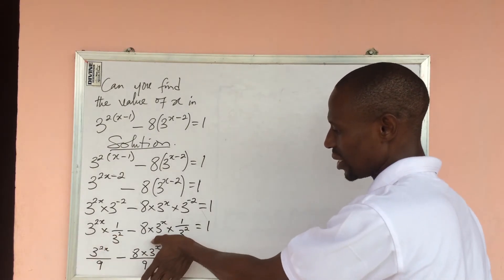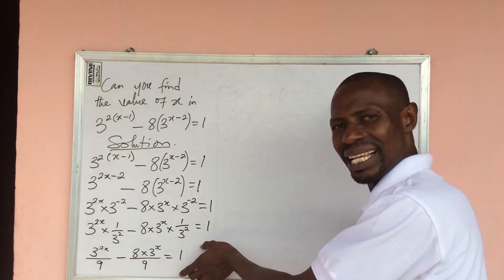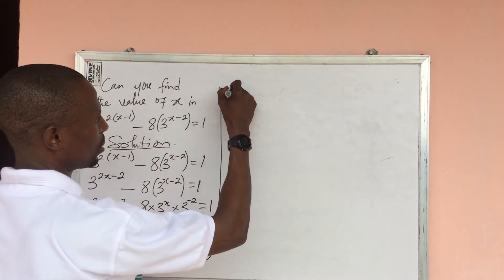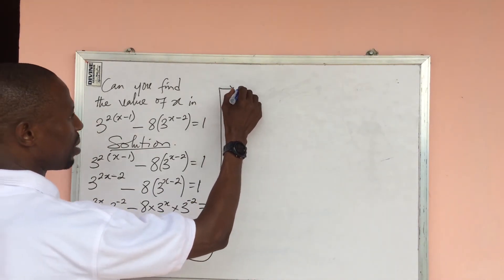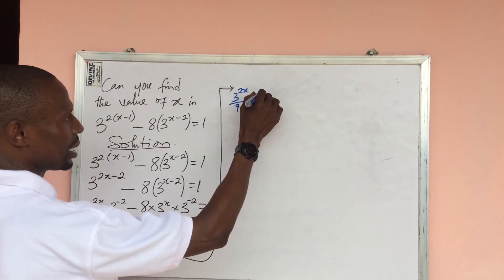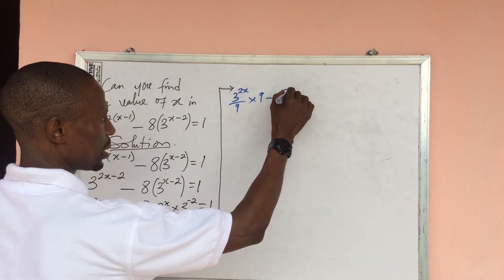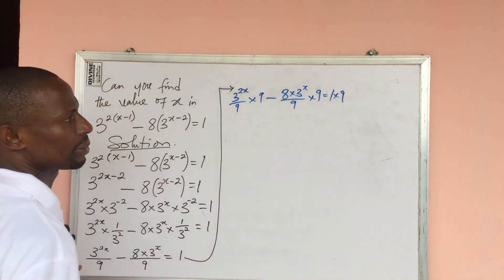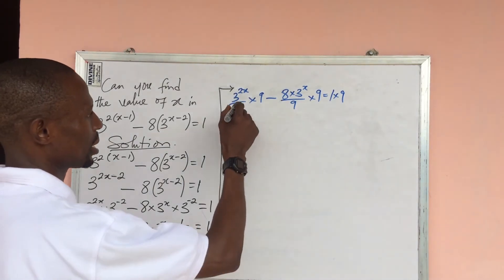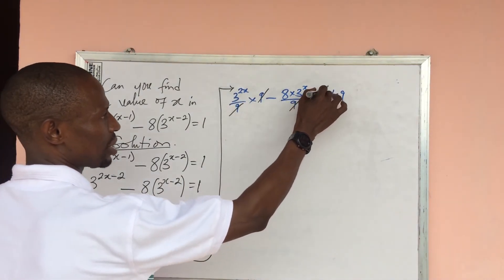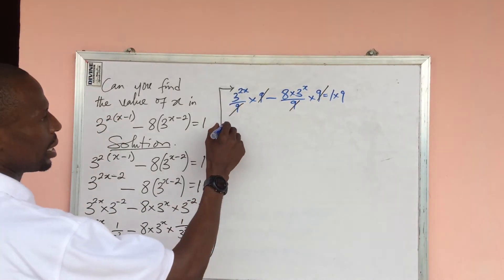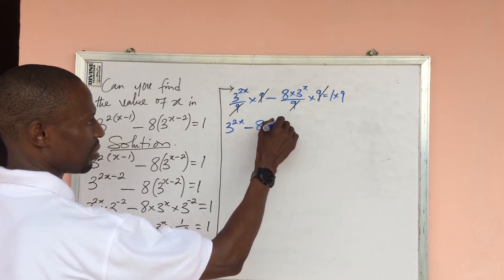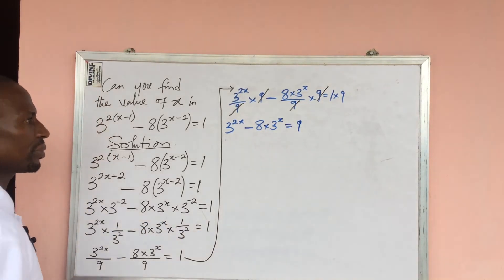We can eliminate the 9s by multiplying the whole equation by 9 — both sides. So: 3 to the power of 2x over 9 times 9, minus 8 times 3 to the power of x over 9 times 9, equals 1 times 9. The 9s cancel, leaving us with: 3 to the power of 2x minus 8 times 3 to the power of x, equal to 9.